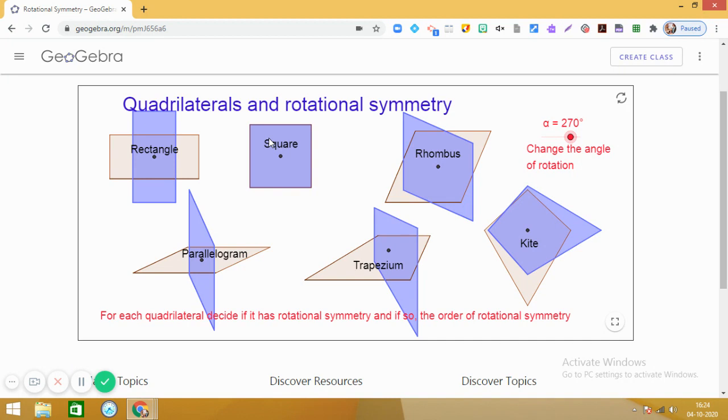So, we see that till now, we found the square, the same shape after a rotation of 90 degrees, then 180 degrees and 270 degrees also. Till now, we have got three rotations. And we have seen that after three turns of 90 degrees each, after every 90 degrees, we are getting the same square.